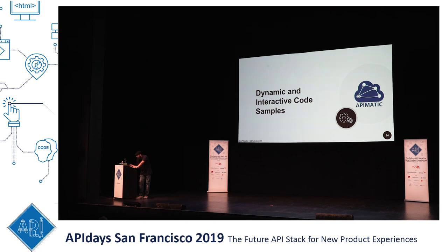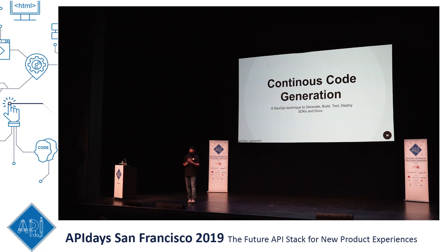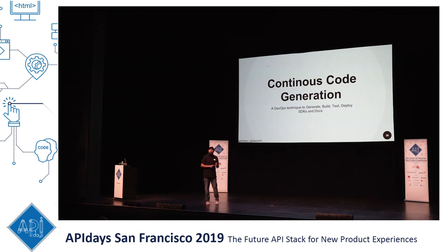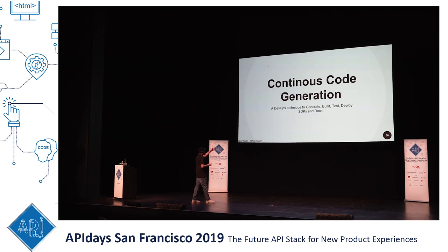We call these dynamic and interactive code samples. The last bit I want to touch on is a technique called continuous code generation, which solves a problem for developers sitting within your organization. Because the generation of code is not bad — SDKs are really helpful — but the problem comes when you try to maintain them, when you don't have resources, when you have an API updated but the SDKs are lagging behind for a year or two. Continuous code generation is a DevOps technique to generate, build, test, and deploy SDKs and docs.